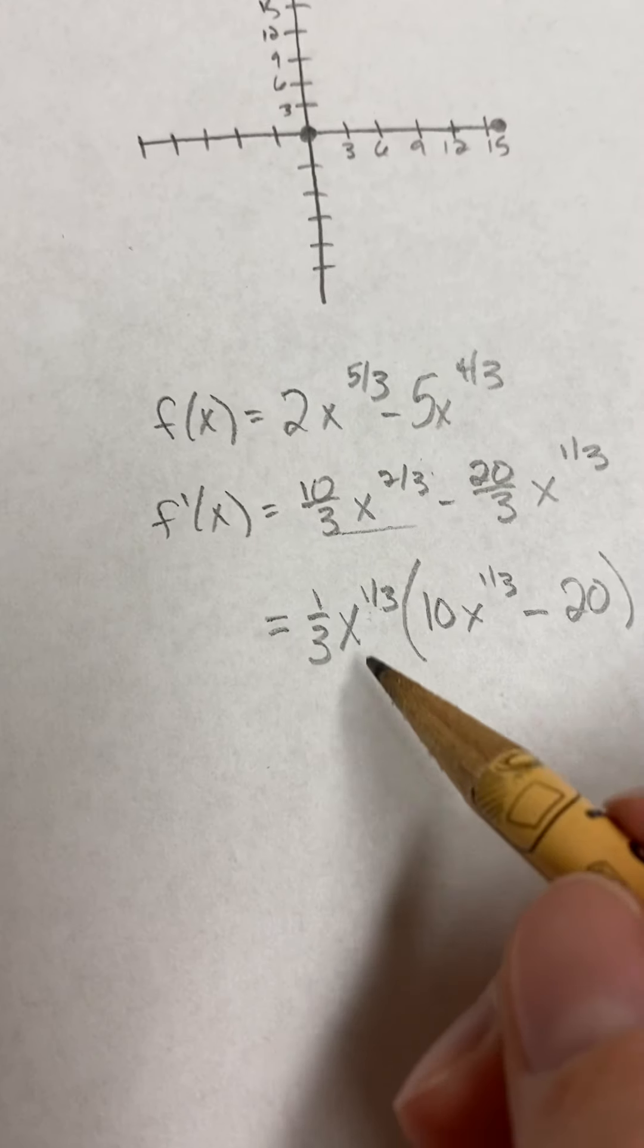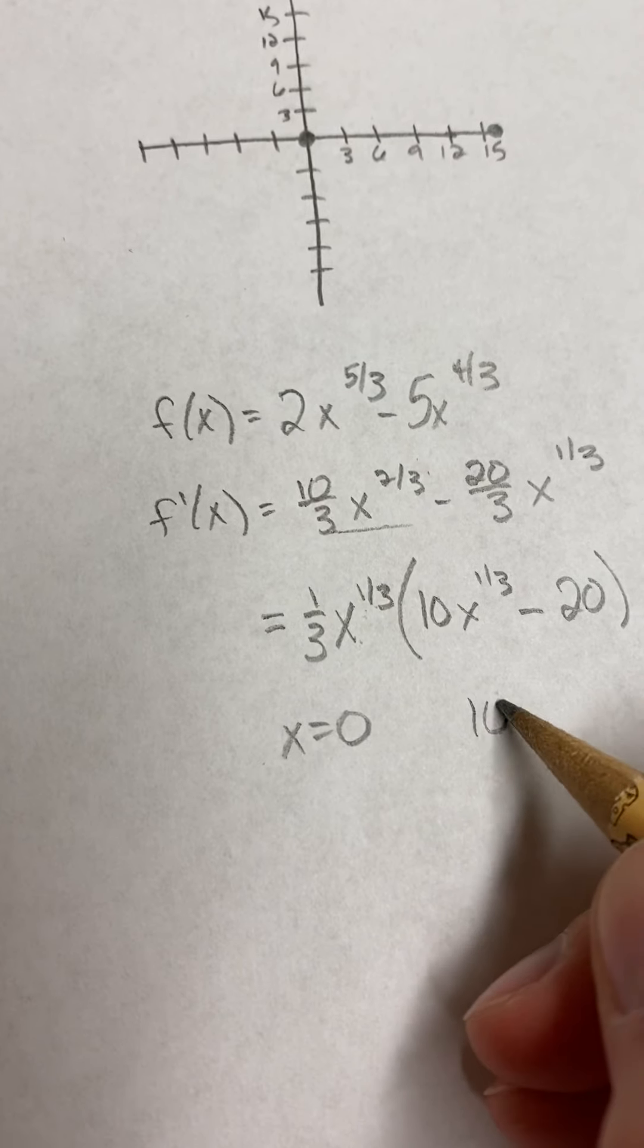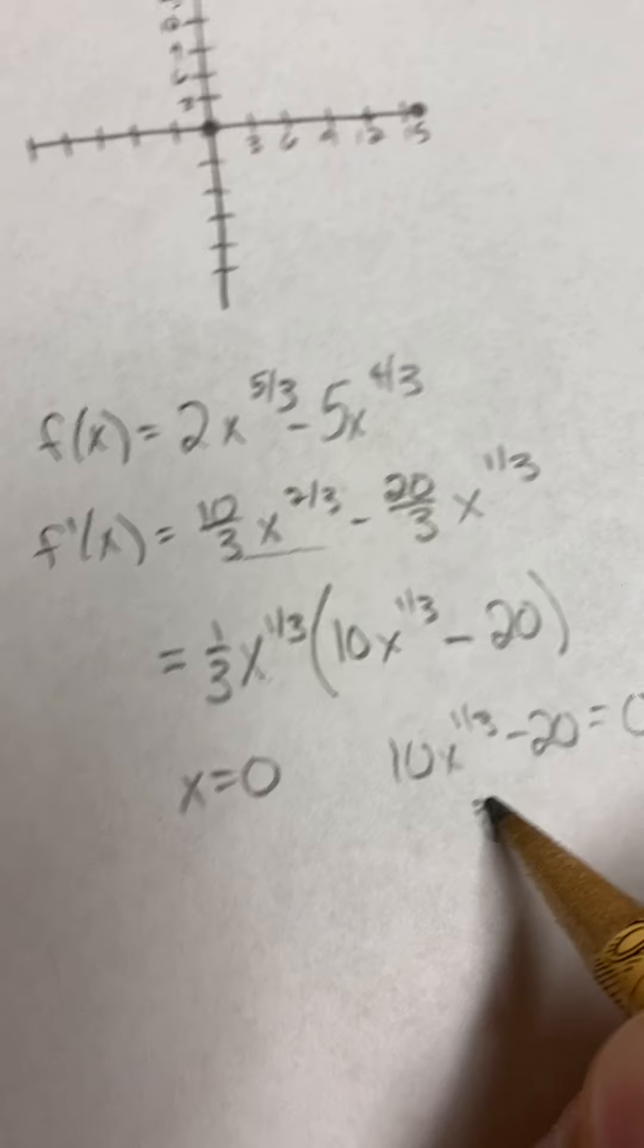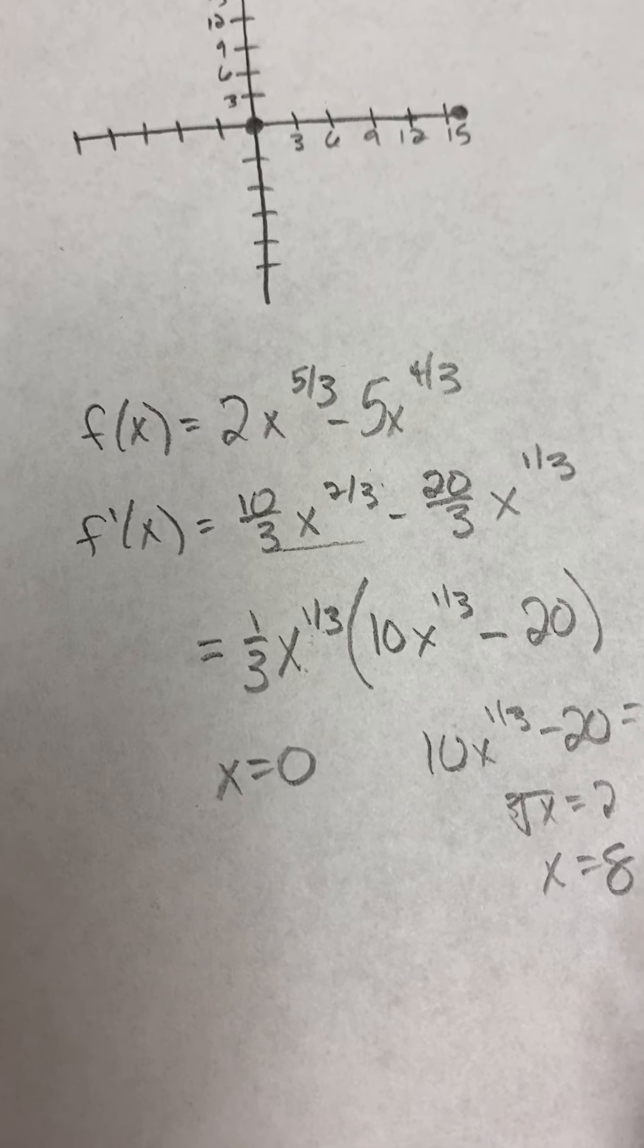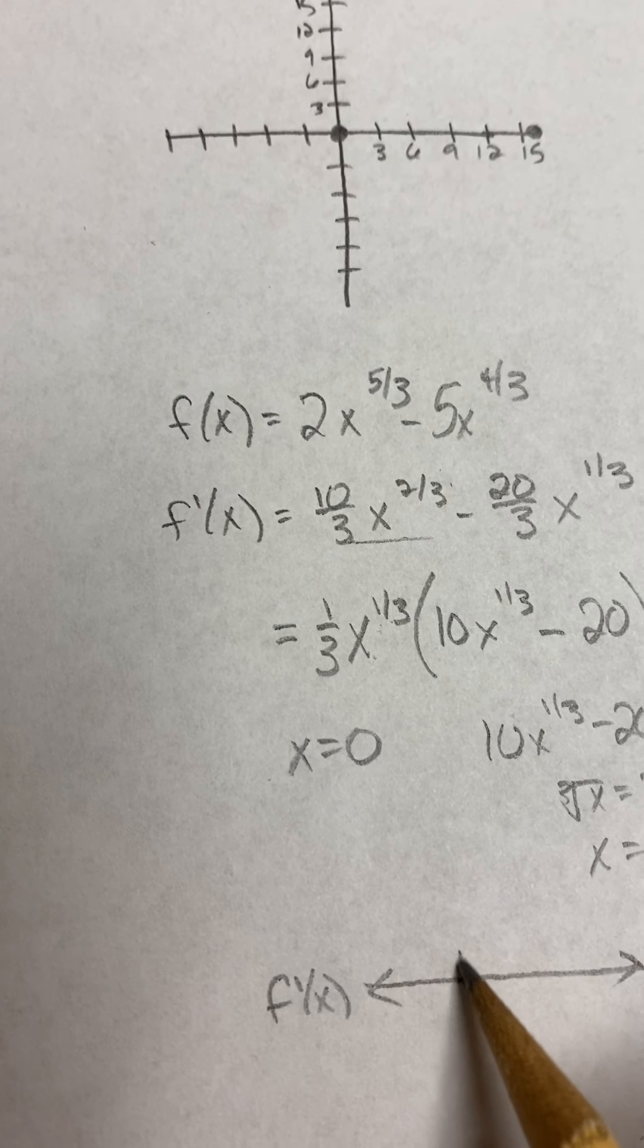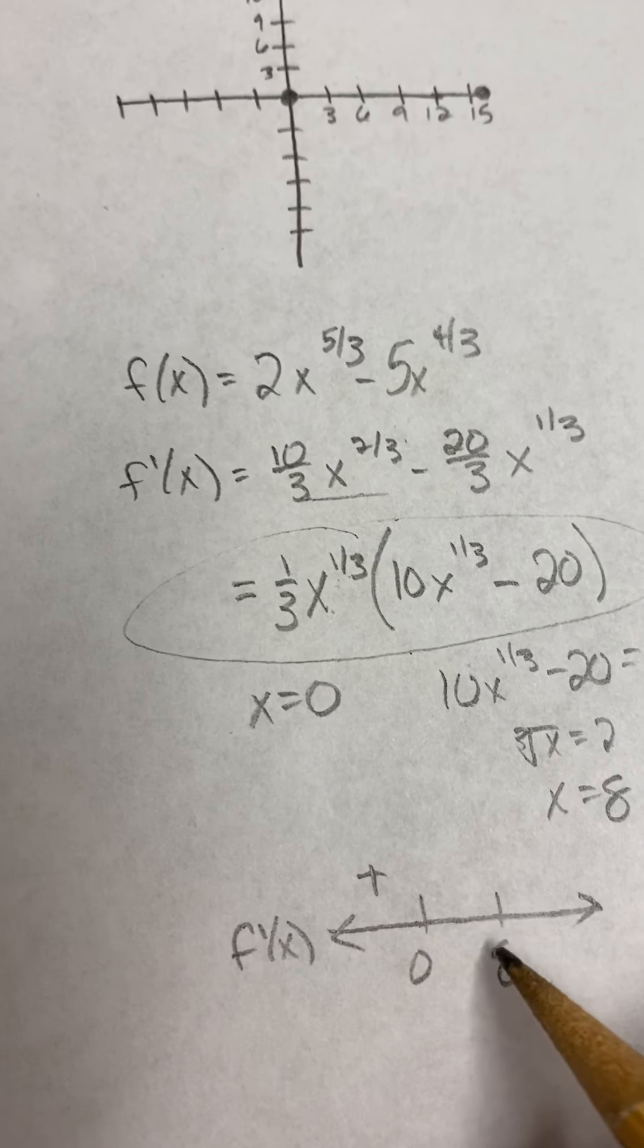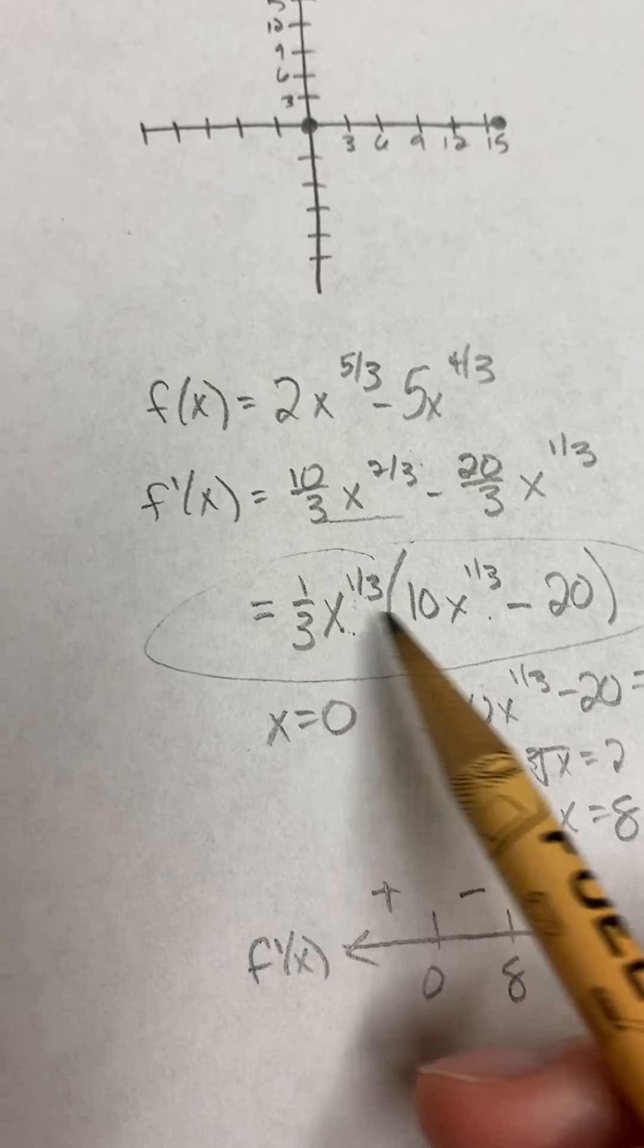So to find my critical numbers, I'm going to set both of these equal to 0, both of those pieces. So either x equals 0, that comes from right here, or 10x to the 1 third minus 20 equals 0. So we add 20 and divide by 2, so that's the cube root of x equals 2, so x equals 8. So these are my two potential minimums and maximums. So we'll put those on the number line and check in the derivative. Okay, remember we're going back up here. We're going to plug in. So if we plug in like a negative 1, we get a negative times a negative, which is a positive. If we plug in 1, we get a positive here and a negative here. If we plug in something like 9, that's going to be a positive and a positive.